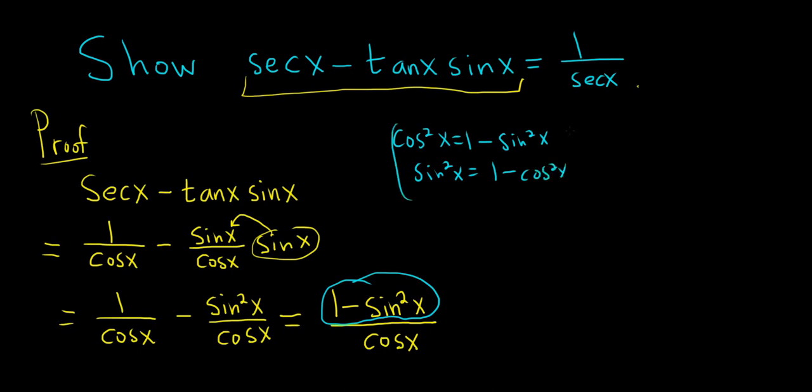Really cheap memory trick. It's 1 minus the other one. So this becomes cosine squared x over cosine x, which simplifies to cosine x.